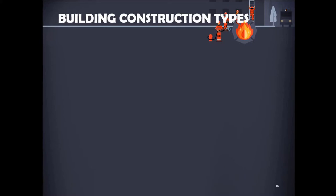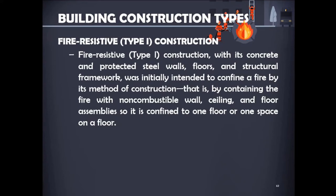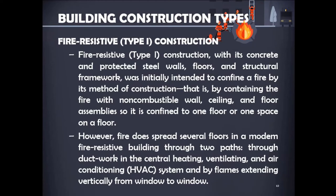Building Construction Types: There are five fundamental categories of building construction. First is fire-resistive Type 1 construction, with its concrete and protective steel walls, floors, and structural framework, initially intended to confine a fire by containing it with non-combustible wall, ceiling, and floor assemblies so it is confined to one floor or one space. However, fire does spread in a modern fire-resistive building through two paths: first, ductwork in the central HVAC system, and second, flames extending vertically from window to window. Air ducts go through walls, floors, partitions, and ceilings, penetrating fire barriers. Fire or hot gases near a return air duct will be sucked into the duct system and blown throughout the structure if the system continues to operate. Therefore, the first action in a burning fire-resistive building should be to shut down the HVAC air system.